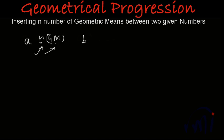If you want to insert n number of GMs between a and b, then those n number of GMs will be in such a way that the whole series including these means will form a geometric progression.